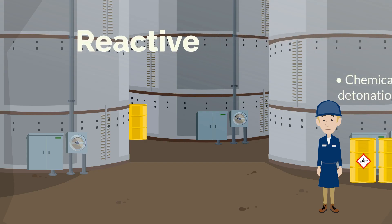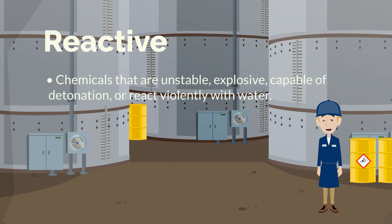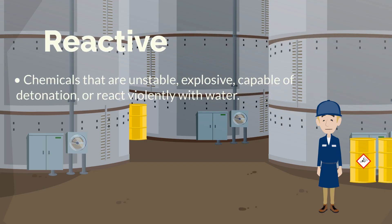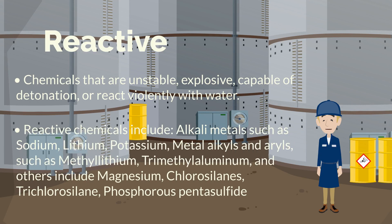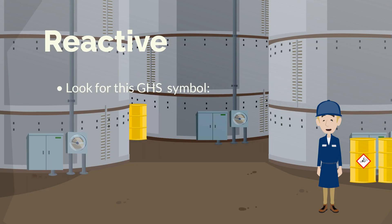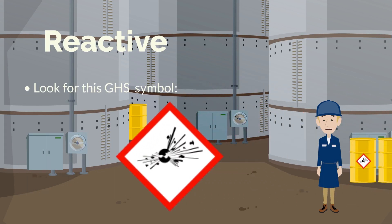Reactive. These chemicals are unstable, explosive, capable of detonation, or react violently with water. Some common examples of reactive chemicals include alkali metals such as sodium, lithium, potassium, and others. Look for this GHS symbol.